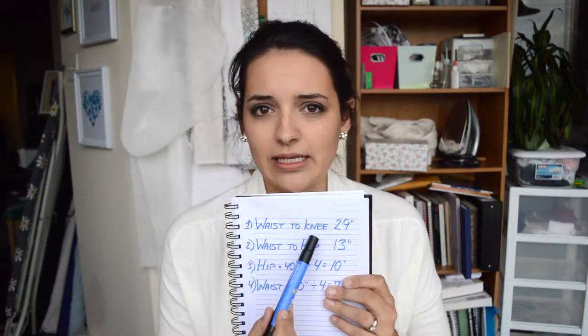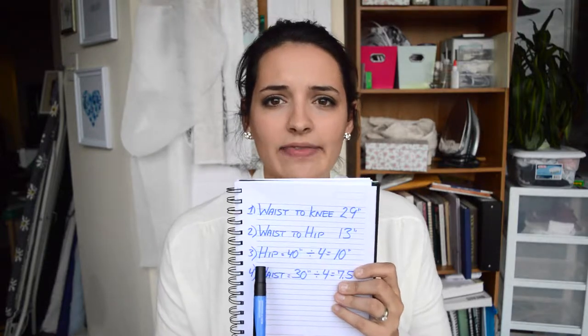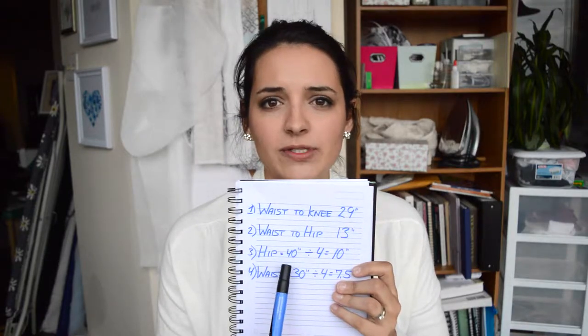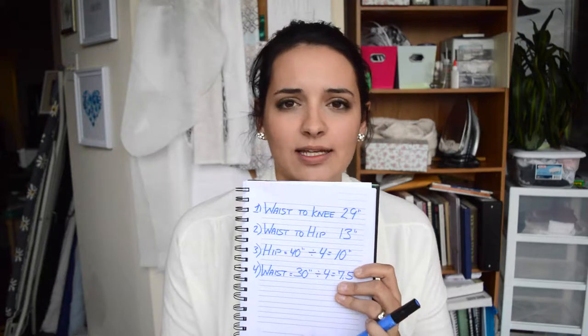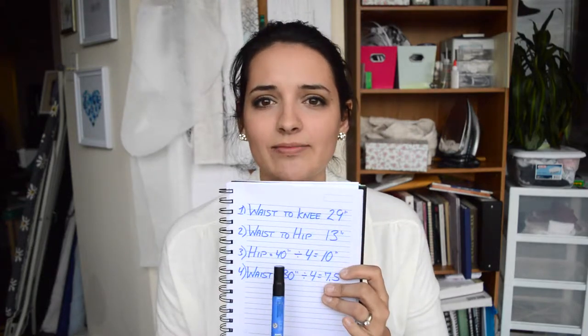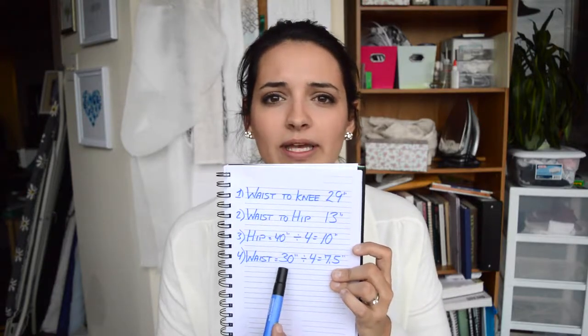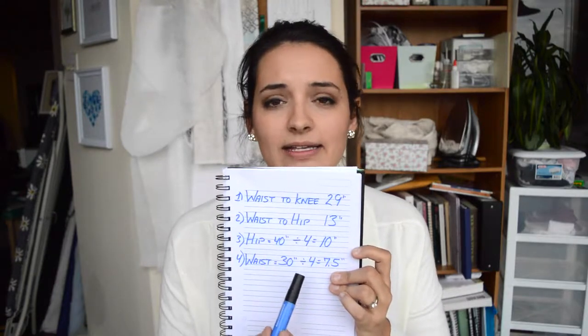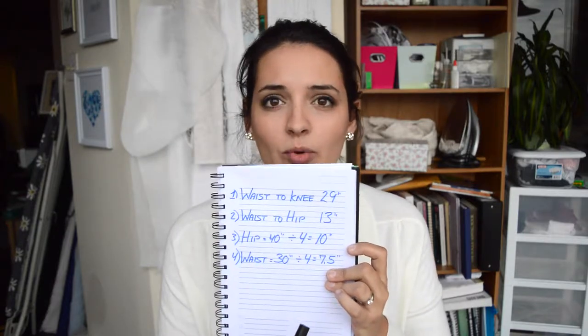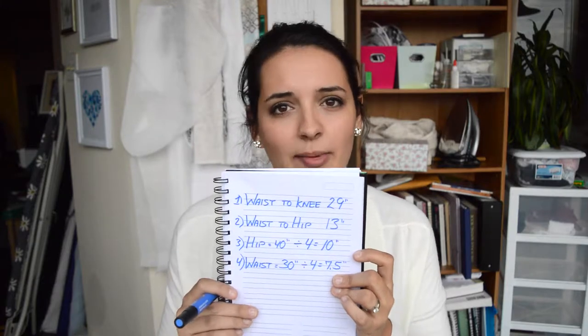I did my waist to knee first, then my waist to hip and recorded that. Then I took my hip measurement which was 40 inches, and because we're drafting a quarter of the skirt you want to divide it by four. Mine's a nice even number so it divides evenly into ten. My waist was 30 inches and I divide that as well into four which becomes 7.5 inches. So you're going to see how these measurements play out into our pattern.